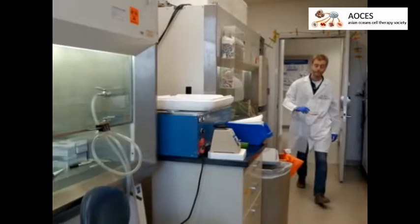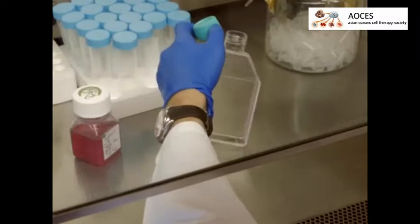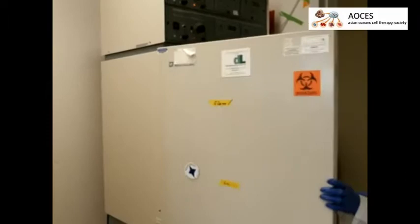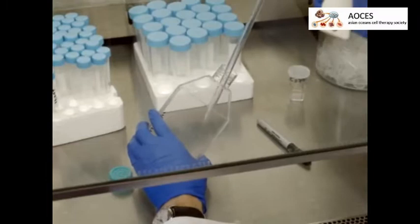To begin, remove a culture dish containing adherent cancer cells from the incubator. Wash the cells once with PBS and add 1.5 milliliters of 0.05% trypsin EDTA. Then incubate the cells for three minutes at 37 degrees Celsius.